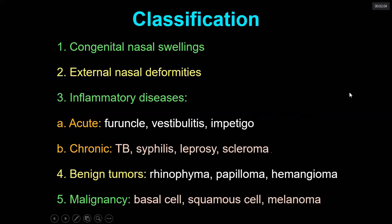How do we classify diseases of the external nose? It can be congenital nasal swellings, external nasal deformities, and inflammatory disease — either acute or chronic. In acute there is furuncle, vestibulitis, and impetigo; in chronic there is TB, syphilis, leprosy, and scleroma. There are also benign tumors like rhinophyma, papilloma, and hemangioma, and malignant tumors like basal cell carcinoma, squamous cell carcinoma, and melanoma.